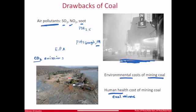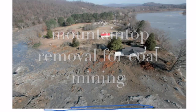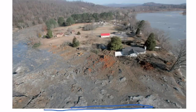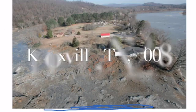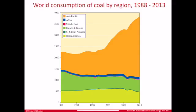There are also environmental costs for people who live in mining areas. Shown here is Knoxville, Tennessee, where homes were buried by 300 million gallons of coal sludge from a flooded coal mine — essentially a mountaintop collapsed down the mountain and overtook the town.